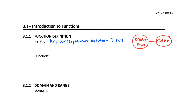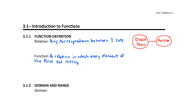A function is a very special type of relation. A function is a relation — that is, it is a correspondence between two sets — but it's a relation in which every element of the first set corresponds to exactly one element of the second set.